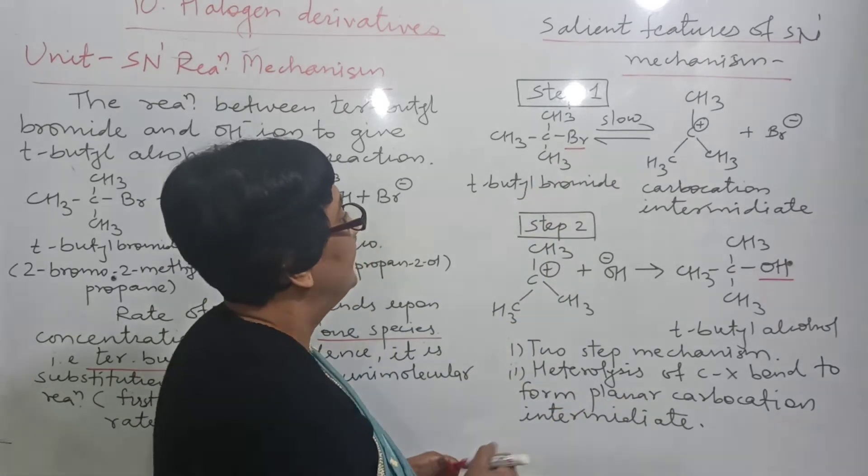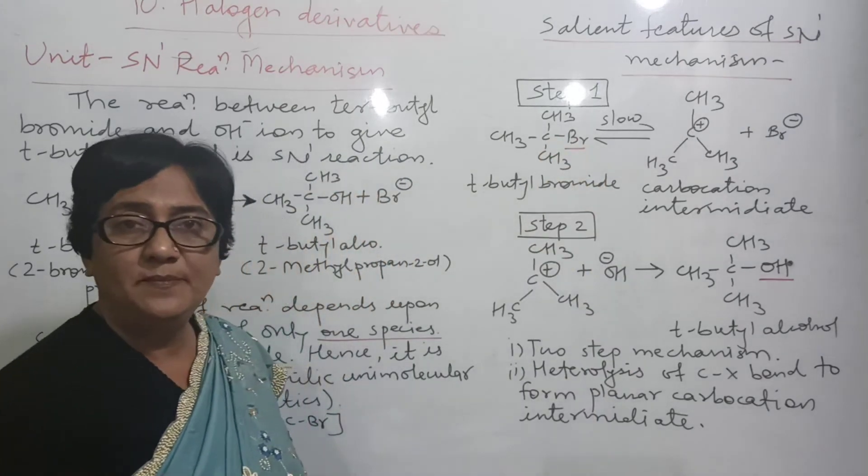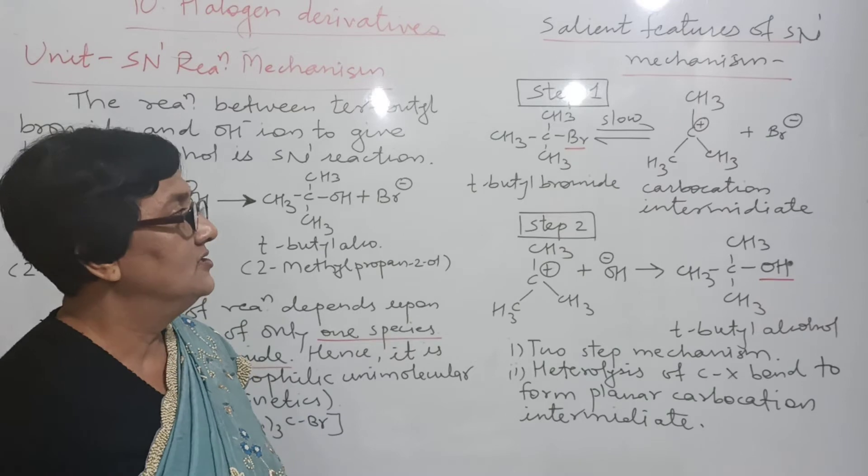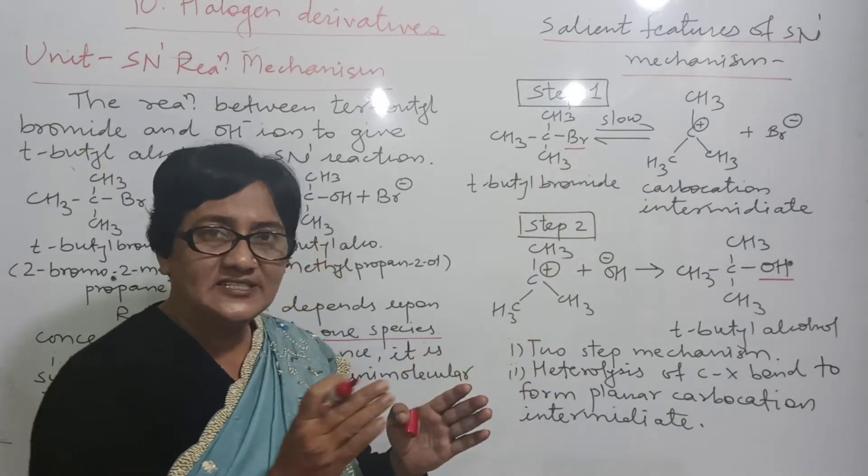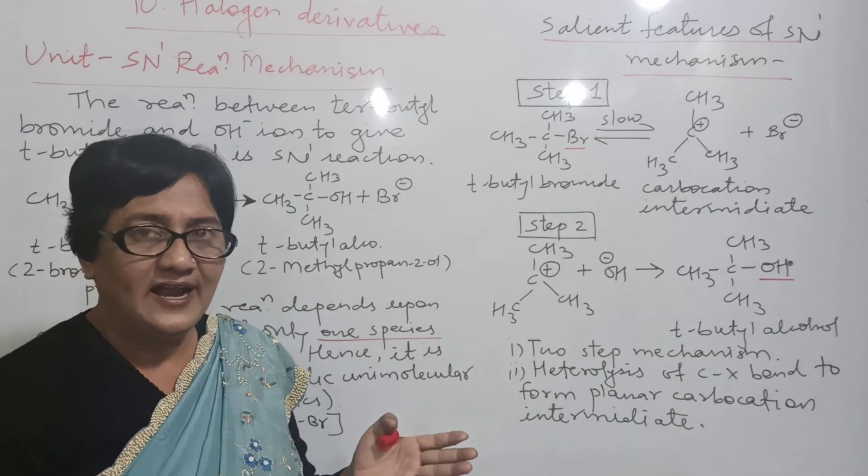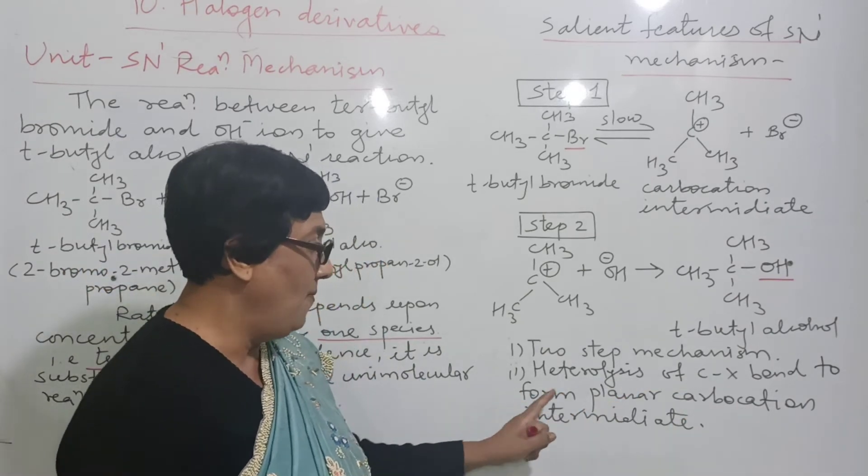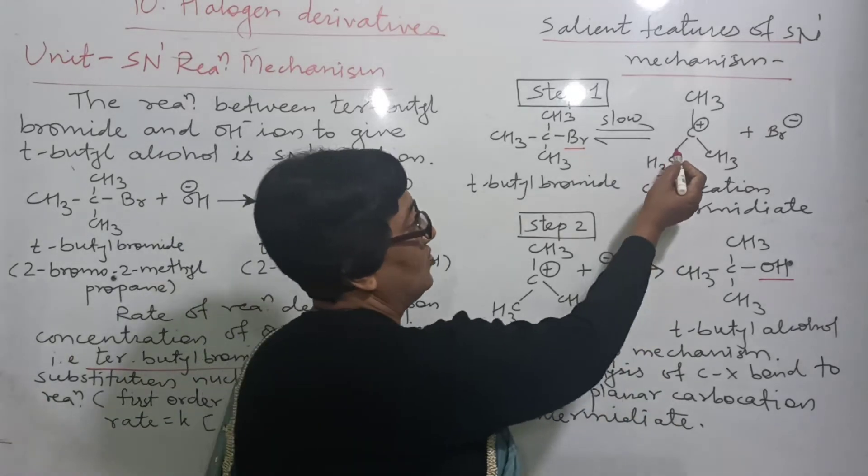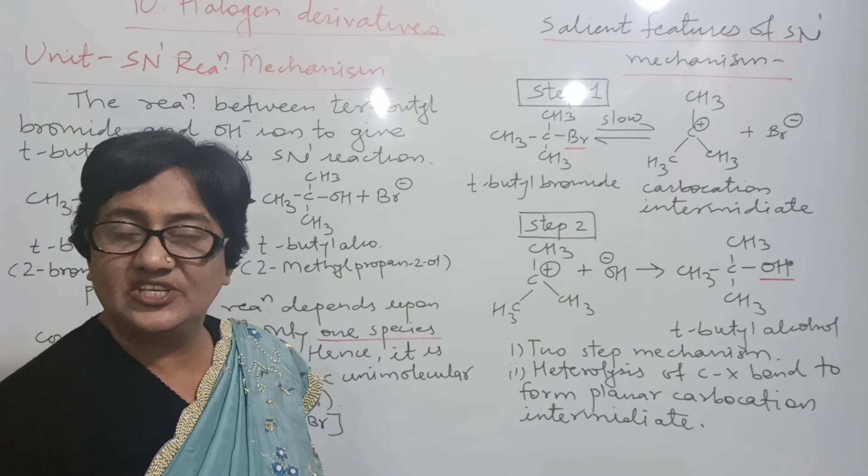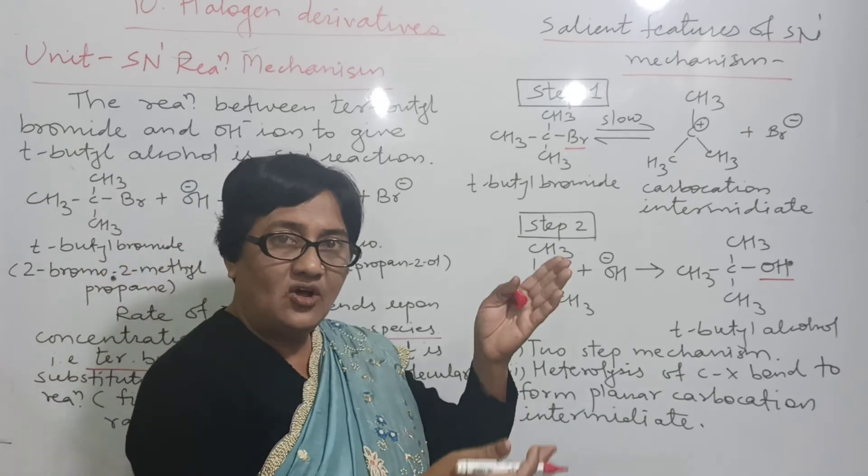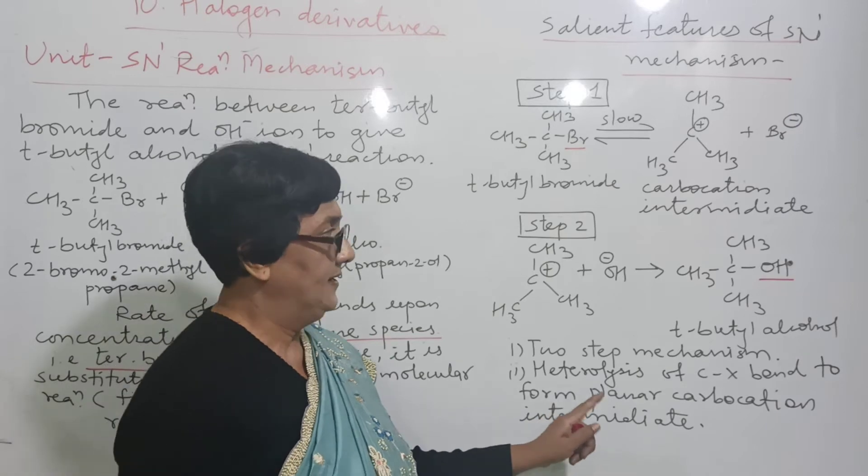Second, heterolysis of CX bond. This bond is called CX bond, C-Br. X means Br, Cl, I, etc. So, in general, it is written. The heterolysis means to pass the different. They are not identical. Heterolysis of CX bond to form planar carbocation. This carbocation is planar. Bond angle between this CH3, C, CH3 is 120 degree. Therefore, all these are in one plane. So, planar carbocation intermediate.